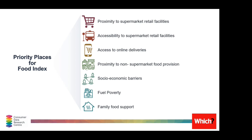In the UK, approximately 650 households make up one neighbourhood or small area geography. The index brings in not only information about access to food but also economic barriers to food. The first four domains cover physical access to food, and the final three encompass economic barriers to affordable food.